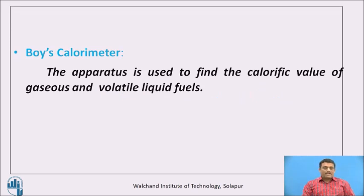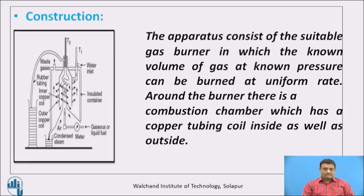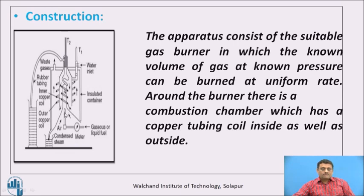The apparatus is used to find out the calorific value of gaseous as well as volatile type of liquid fuels. The apparatus consists of a suitable gas burner in which a known volume of gas at known pressure can be burned at a uniform rate. Around the burner there is a combustion chamber which has a copper tubing coil inside as well as outside. This is the combustion chamber, this is the burner, and this has a pressure regulator through which we can adjust the flow of the gas. When gas undergoes the combustion process, it evolves combustion products which accumulate inside the combustion chamber.